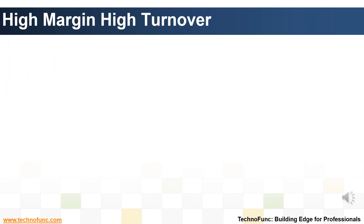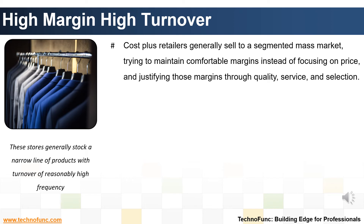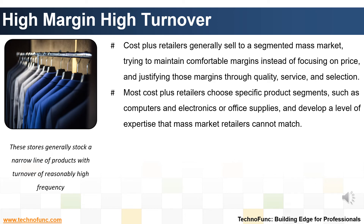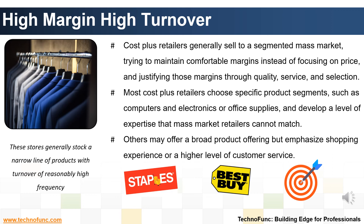The third model — high margin, high turnover — involves stores that generally stock a narrow line of products with a turnover of reasonably high frequency. Cost plus retailers generally sell to a segmented mass market, trying to maintain comfortable margins instead of focusing on price, and justifying those margins through quality, service, and selection. They could be situated in a non-commercial area, but not too far from a major thoroughfare. Their locational advantage allows them to charge a higher price. High overhead costs and low volumes also necessitate a higher price. Most cost plus retailers choose specific product segments, such as computers and electronics or office supplies, and develop a level of expertise that mass market retailers cannot match. Others may offer a broad product offering but emphasize a shopping experience or a higher level of customer service. Staples and Best Buy represent the best examples, while Target is a good example of a cost plus retailer that offers a broad array of products.